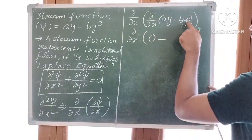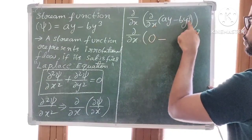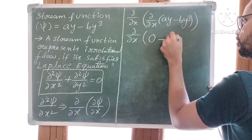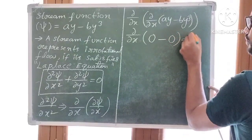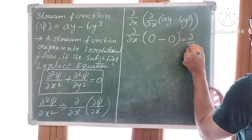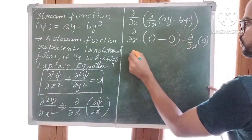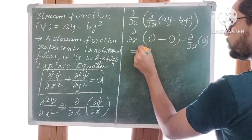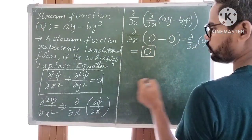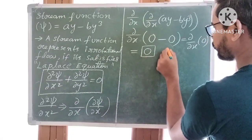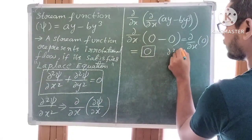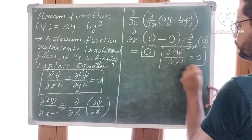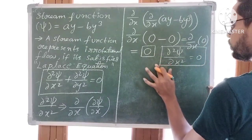Minus By³. Again, we are doing differentiation with respect to x, so By³ is also a constant. The derivative of a constant is 0. So ∂/∂x of 0 minus 0 equals 0. Differentiation of 0 is a constant, so the derivative value is 0. Therefore, ∂²Ψ/∂x² is equal to 0.